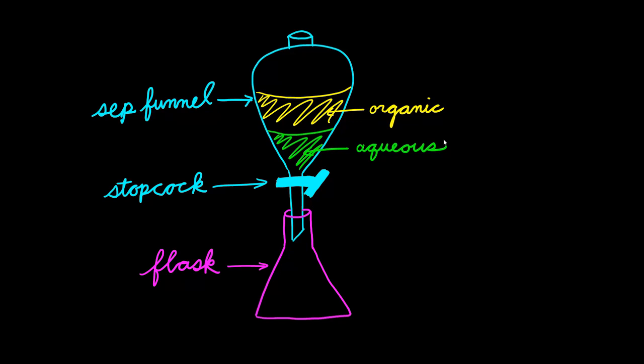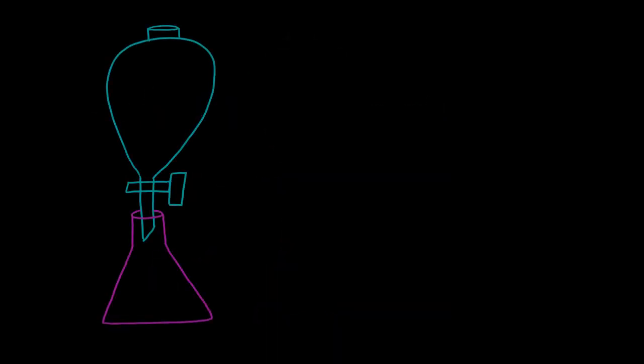So how exactly do we separate the organic from the aqueous layers? Well, what you need to do first is open up the stopcock. So on top, I showed you before that we have this layer, say ether.